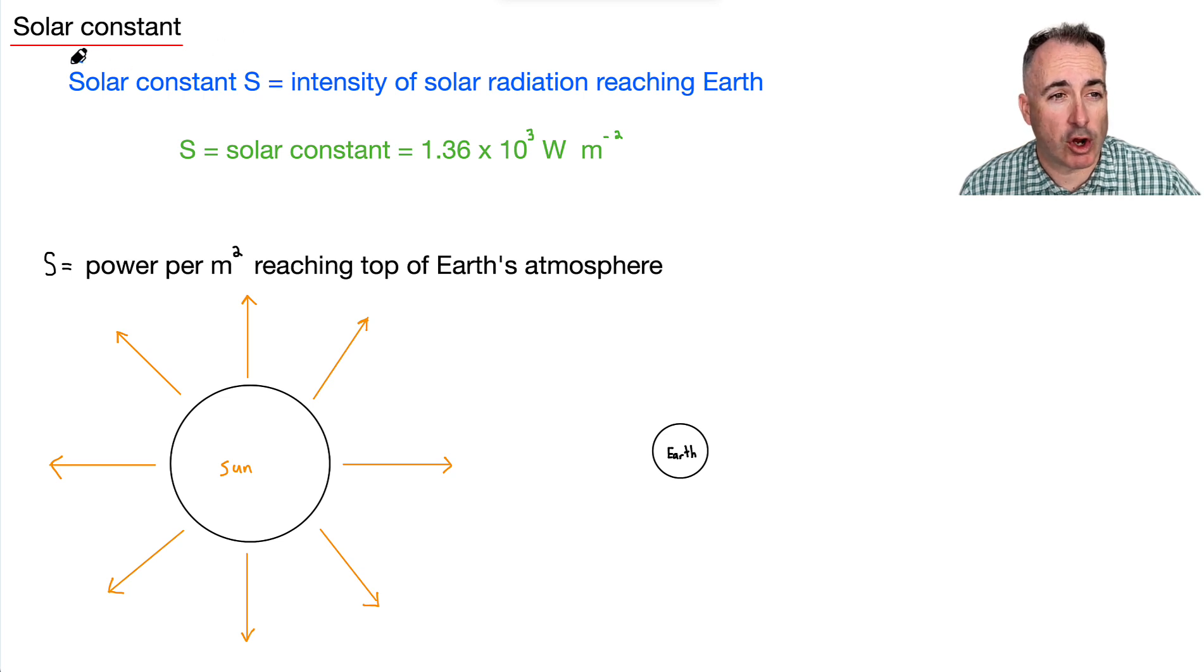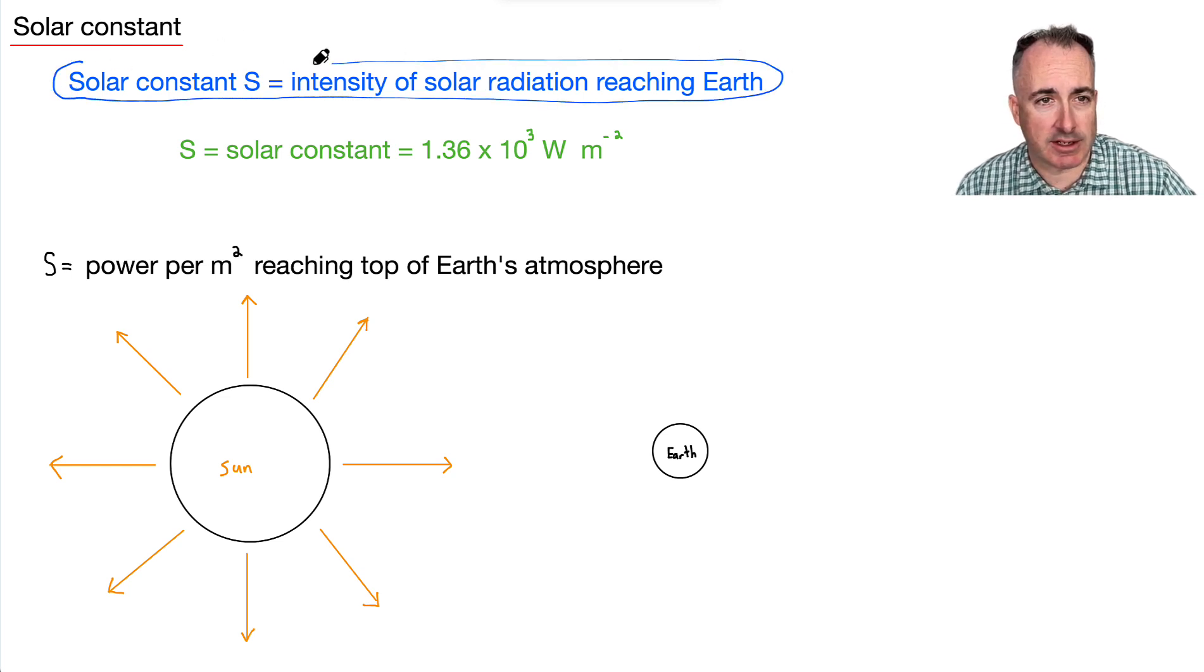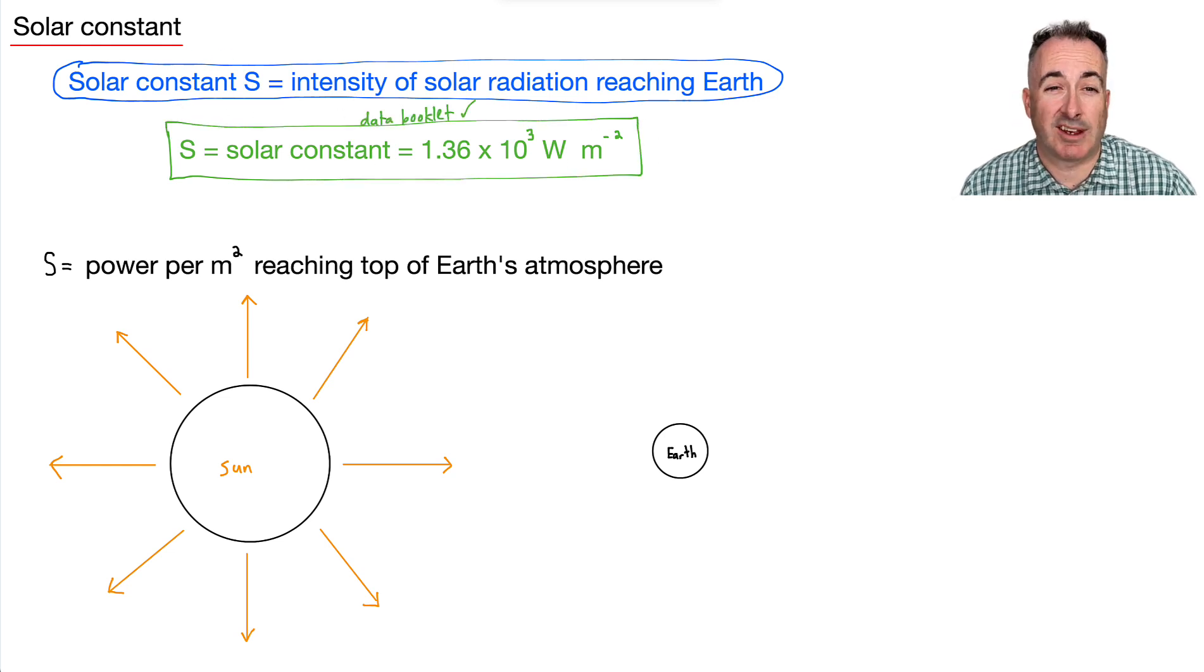So we have something called the solar constant, and we call that S. And the definition is this is the intensity of the solar radiation that reaches Earth. It's really important to know this right here you find on your data booklet, which is good. That's actually on page three. So you don't have to memorize it. It's basically 1,360 watts per meter squared.